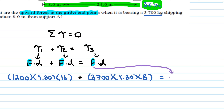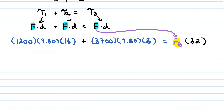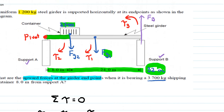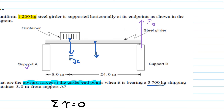Force B acts at 32 meters from the pivot point. We now have enough information to solve for the missing variable, Force B, using this linear equation. After working through the calculations, the force at support B is 14,945 Newtons.